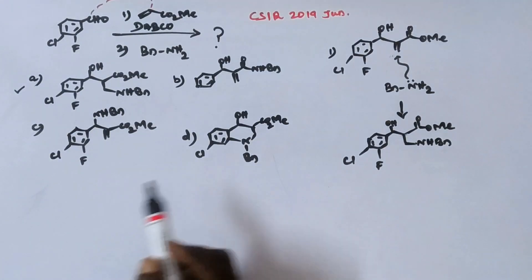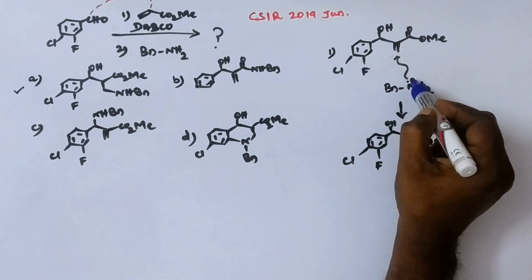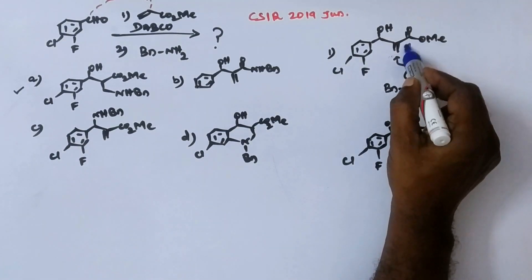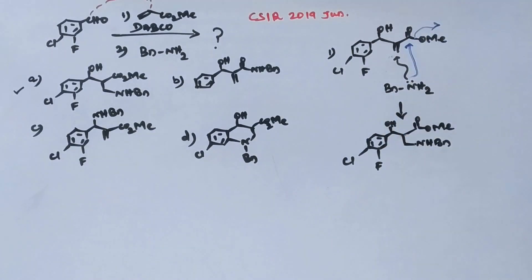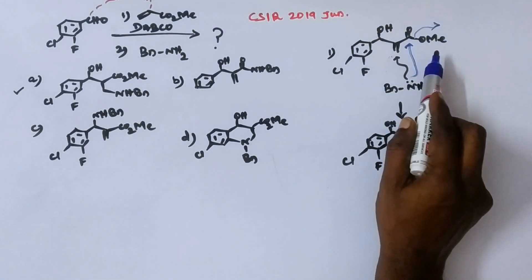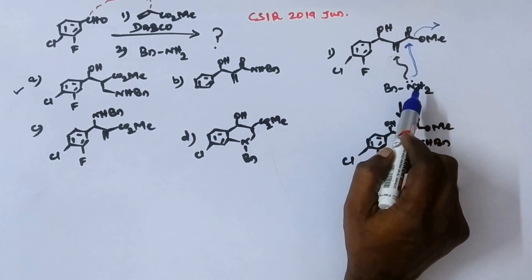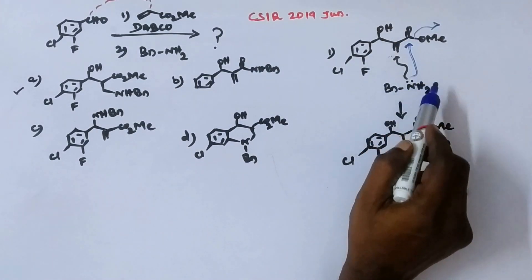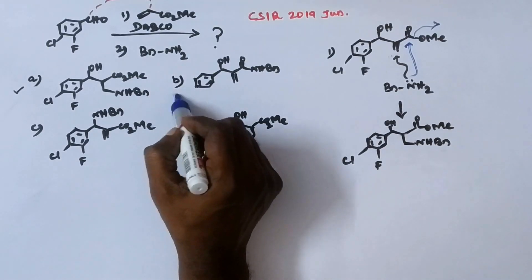However, let's examine the other options as well. In case this nitrogen lone pair attacks this carbonyl carbon, eliminating this methoxy group. In the place of methoxy, you get amine. So the product is amide. Where is that option? Option B. So option B may be the product.